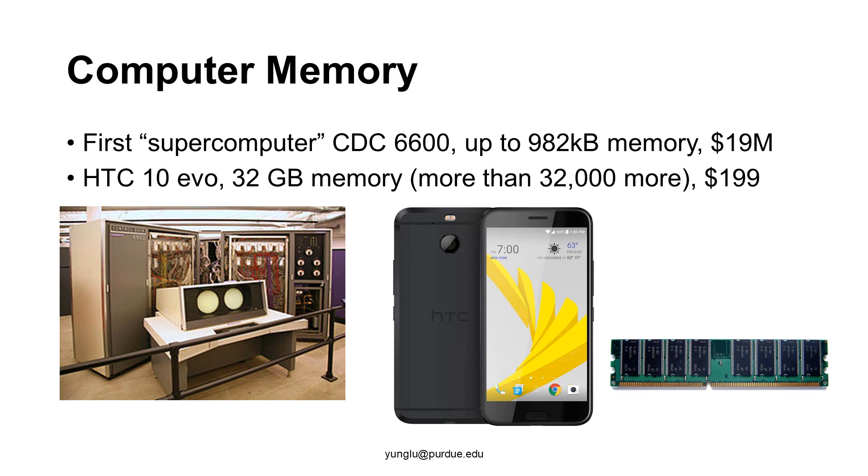In contrast, an HTC 10 Evo phone costs about $199 and has 32 gigabytes of memory. Giga means a billion. Thus, the mobile phone has more than 32,000 times the memory and costs about 0.001% of a supercomputer.